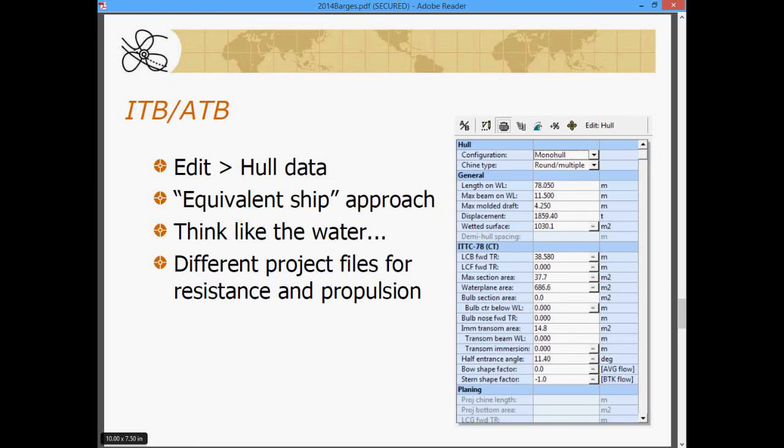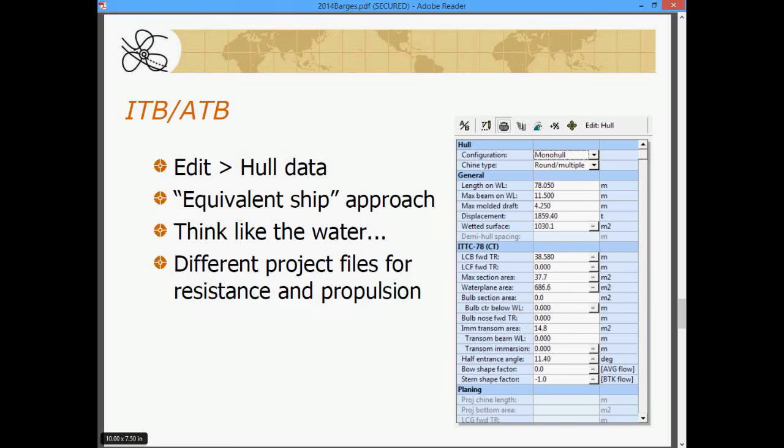The third and final barge type is the integrated tug barge or articulated tug barge. Now, unlike the other two, this is not treated as a separate resistance prediction. Outside of the process, it is dealt with as an equivalent ship.